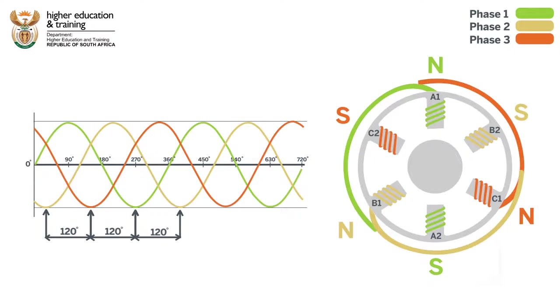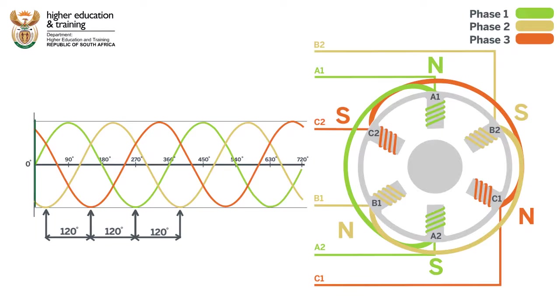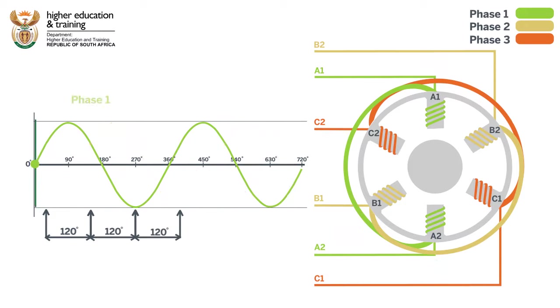Each pair of stator windings is connected to one phase. As current flows through each pair of windings, electromagnets are formed and a magnetic field is created.